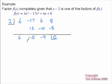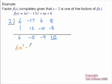What's nice about this is we're down to three numbers. We started with a cubic, so this must be a square. When we get down to three numbers, we're dealing with a quadratic. So I'm going to rewrite it as a quadratic, which would be 6x squared minus 5x minus 4.